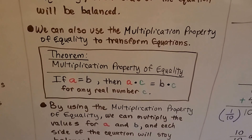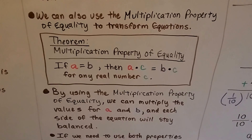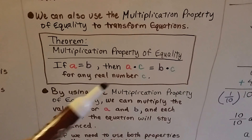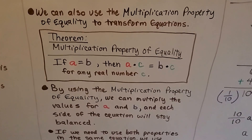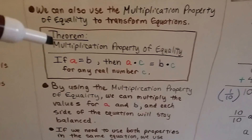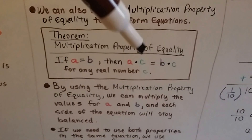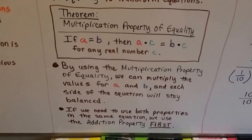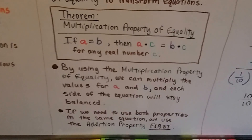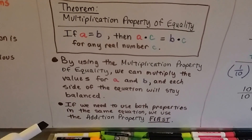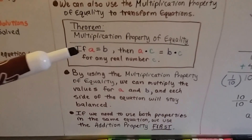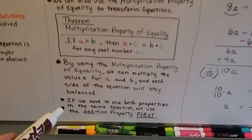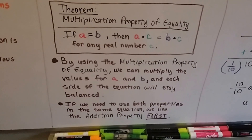We can also use the multiplication property of equality to transform equations. This is our second theorem: if a equals b, then a times c equals b times c for any real number c. If a is 2 and b is 2, multiplying each side by the same number keeps them equal, so each side of the equation stays balanced. If we need to use both properties in the same equation, we always use the addition property first.